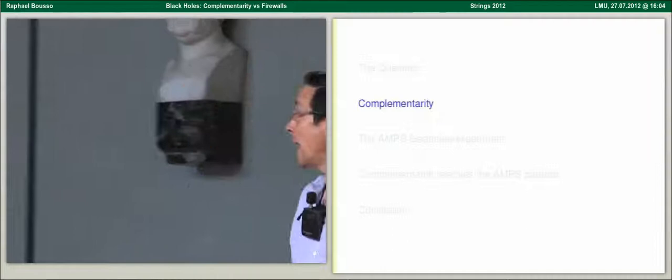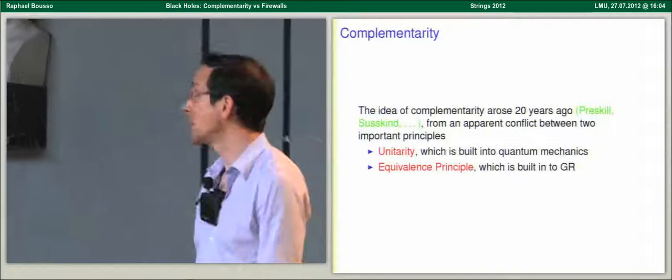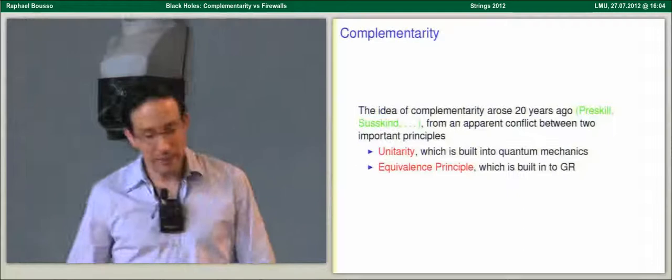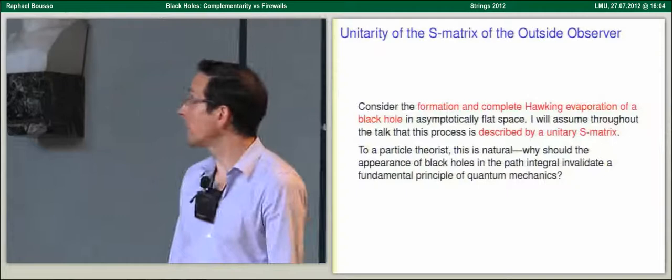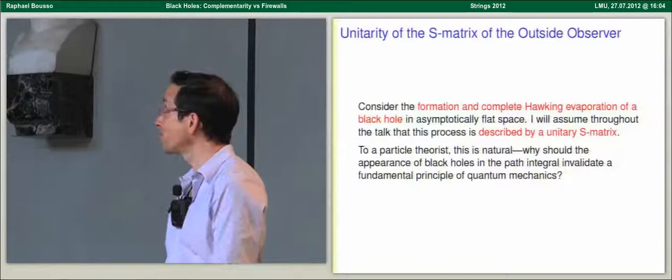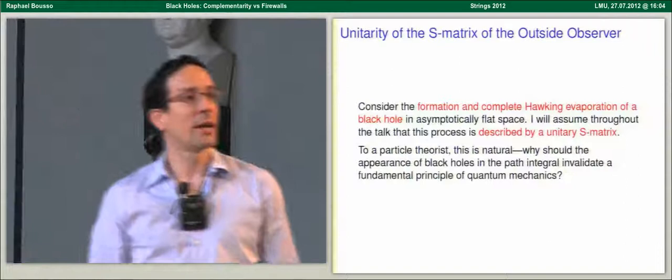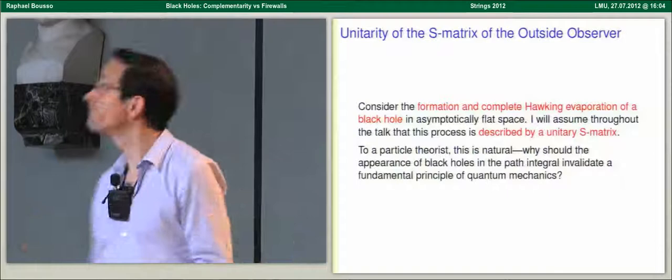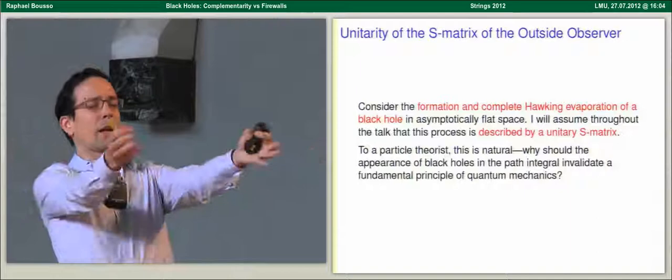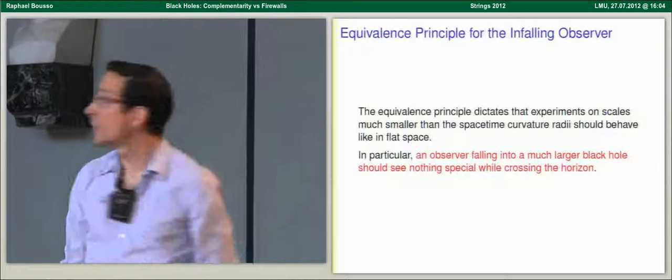I'm going to start by reviewing the old story of complementarity, then tell you about the AMPS thought experiment, and try to convince you that complementarity still saves the day. The idea of complementarity came precisely from this conflict between unitarity and the equivalence principle. We think about a black hole that forms from a pure state, with complete Hawking evaporation after timescale R³. Throughout this talk I'll assume this is described by a unitary S-matrix — without that assumption there's no paradox.